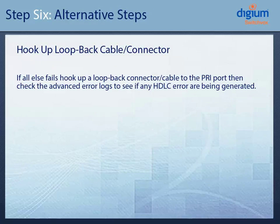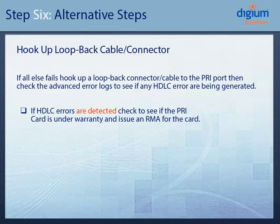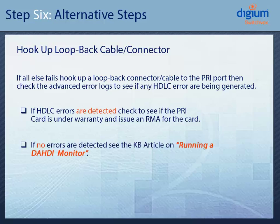If all else fails, you can hook up a loopback connector or cable to the PRI port, then check the advanced error logs to see if any HDLC errors are being generated. If HDLC errors are detected, check to see if the PRI card is under warranty and issue an RMA for the card. If no errors are detected and the issue still persists, see the KB article on Running a DOTI Monitor.